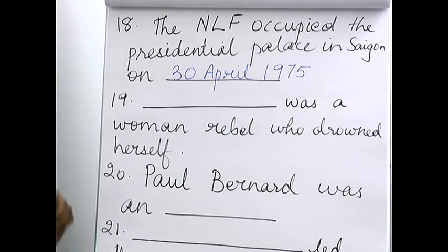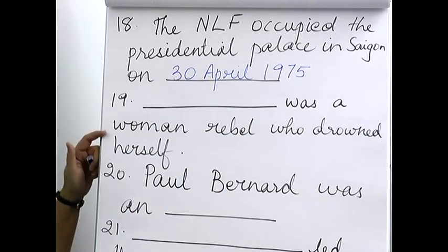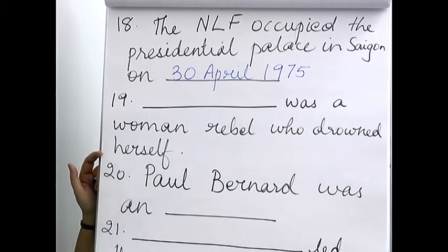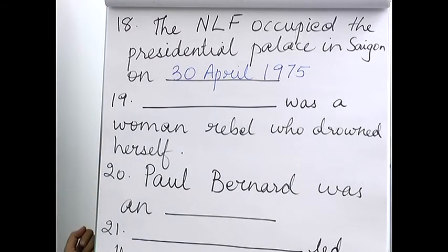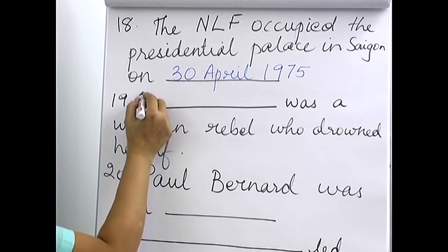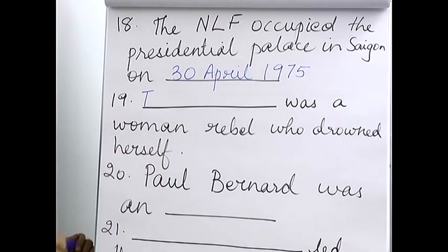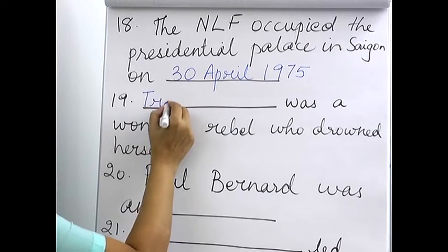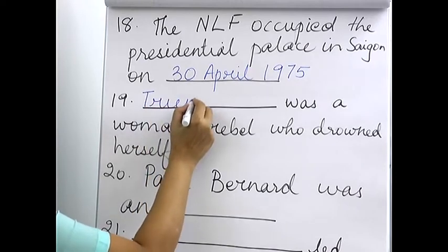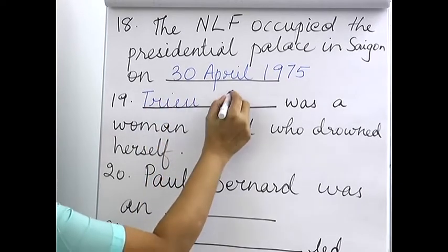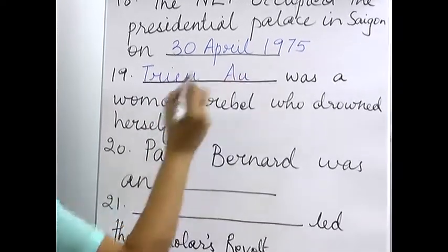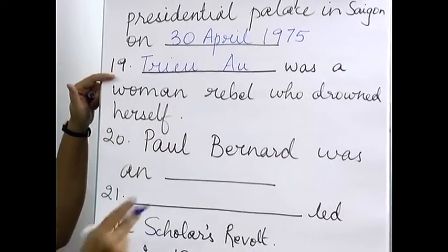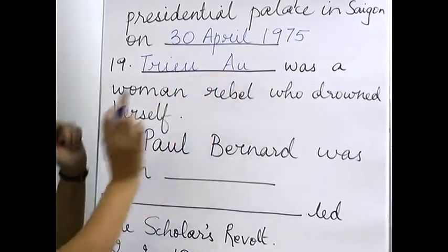Nineteenth: someone was a woman rebel who drowned herself. Who was the woman rebel who drowned herself? That is Trieu Au. This is her name and this is her surname.